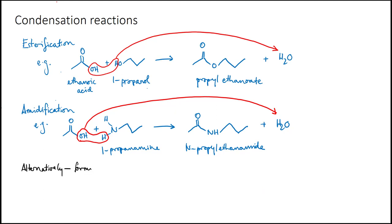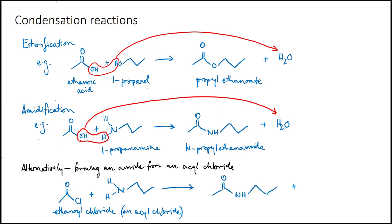An acyl chloride is just a carboxylic acid that's had its OH group replaced by a chlorine atom. Here we've got ethanoyl chloride, the acyl chloride version of ethanoic acid, and it reacts with propanamine to give the same amide as above. The only difference is that the byproduct is now HCl, hydrochloric acid, instead of water.